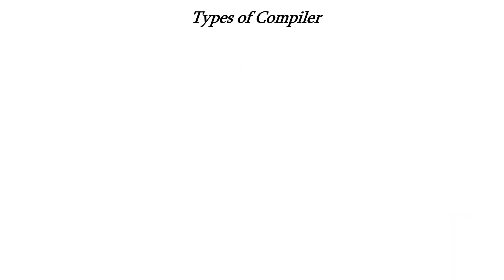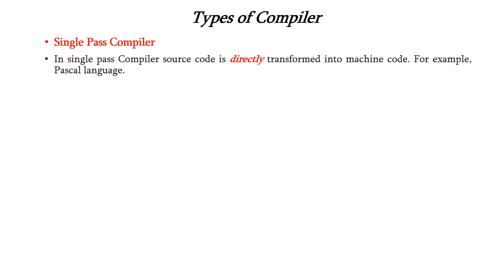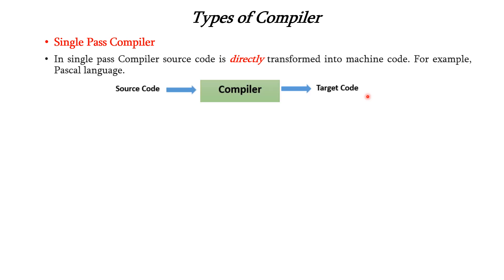Next are the types of compiler. We have three types: single-pass compiler, two-pass compiler, and multi-pass compiler. In a single-pass compiler, source code is directly transformed into the machine code. For example, in Pascal, the source code will be directly transformed into the machine code. There is no intermediate representation — only the source code will be the input to the compiler and it directly transforms it to the target code or machine code.